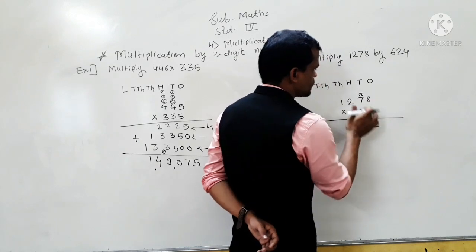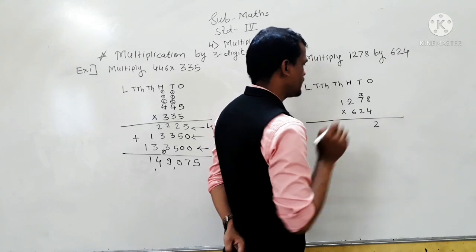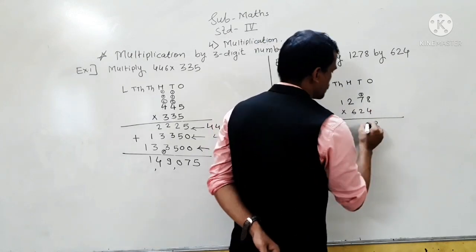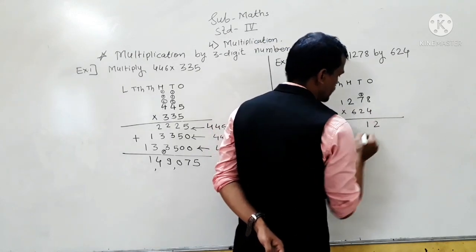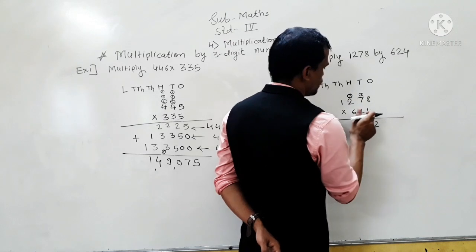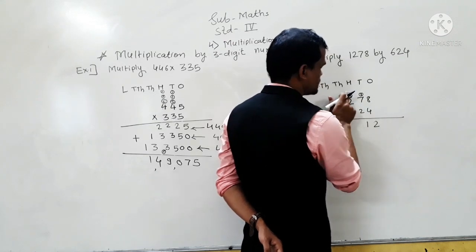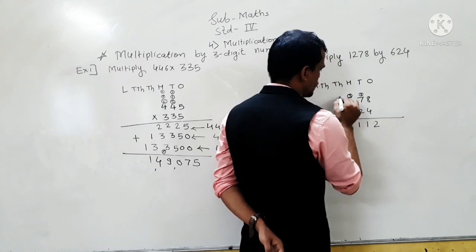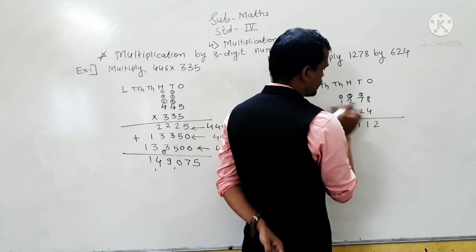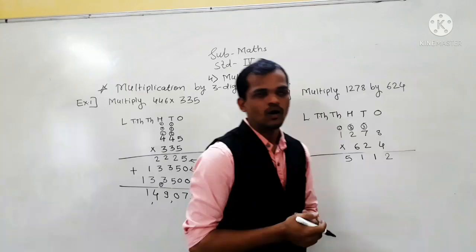Then, 4 sevens are 28, 28 plus 3 is 31 — write 1 here and carry 3. Then 4 twos are 8, 8 plus 3 is 11 — wait, let me recalculate: 4 eights plus 3 gives 11 — write 1 here and carry 1. Then 4 ones are 4, 4 plus 1 is 5.